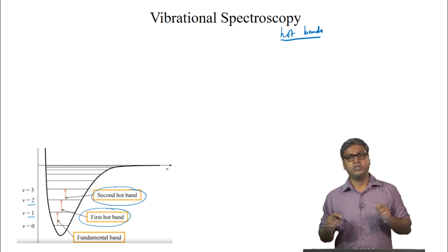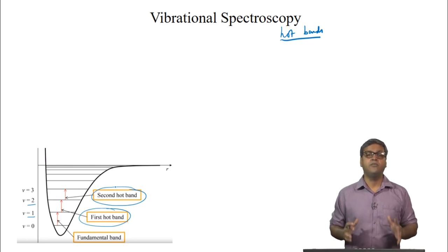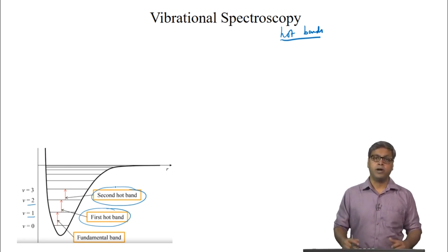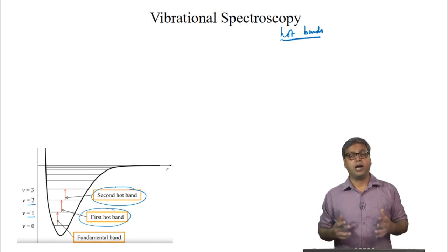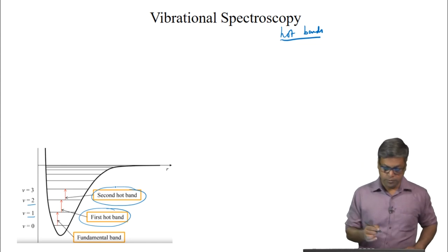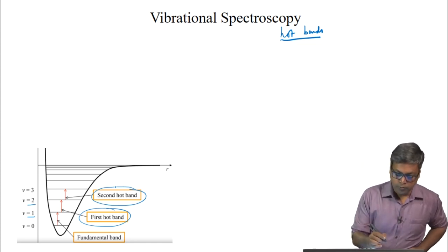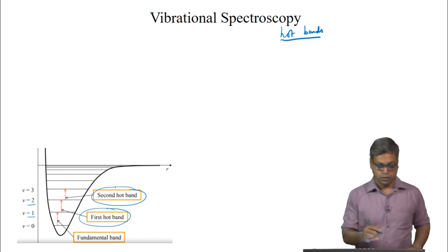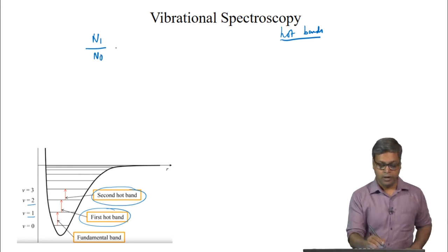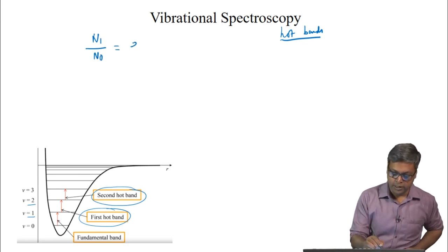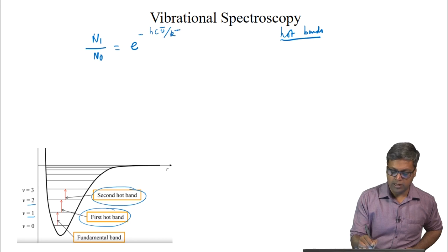Hot bands can be seen at much higher temperature where the population of the V=1 level increases as calculated from the Maxwell-Boltzmann distribution. Hot bands can also be seen for a much heavier molecule where the frequency is much smaller, like a heavier diatomic molecule. From the Maxwell-Boltzmann distribution, N1/N0 equals exp(−hc nu-bar / kT).